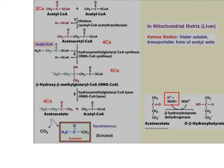Acetyl-CoA cannot be exported into the blood. However, acetoacetate and beta-hydroxybutyrate are both highly soluble in the blood and can easily be taken up by peripheral tissue. The thing to remember is that these are both acids, and if you overproduce them, you're going to get a ketoacidosis.